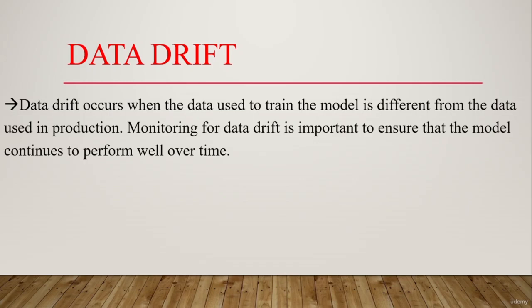Data drift is an important concept in MLOps. Data drift refers to changes in the distribution of the data used to train a machine learning model. Data drift can occur due to various reasons such as changes in the business environment, changes in user behavior, or changes in the data collection process. There are different types of data drift: concept drift, seasonal drift, covariate drift, and outlier drift. Concept drift occurs when the relationship between the input and output variables changes over time.